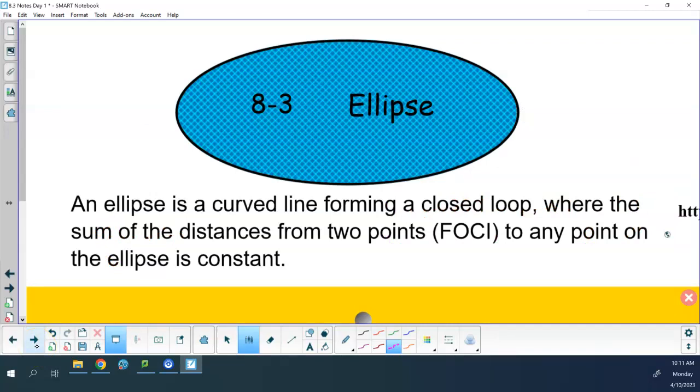Today we're going to talk about ellipses. The mathematical definition of an ellipse is a curved line forming a closed loop where the sum of the distances from two points, we call those the foci, which is plural of focus, to any point on the ellipse is constant. Basically, an ellipse is a circle either stretched out horizontally or stretched out vertically.